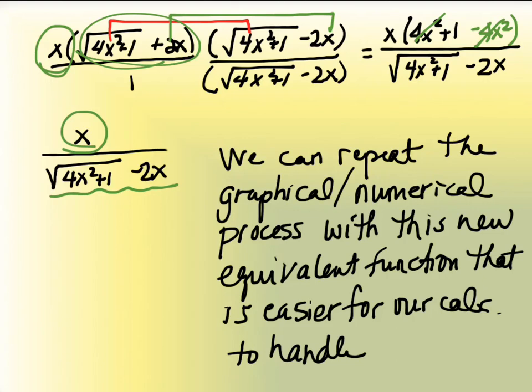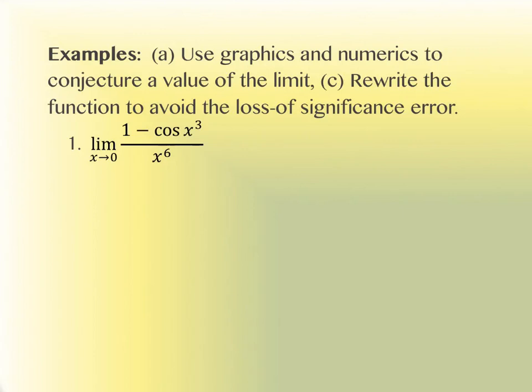I'm going to repeat all of this idea now with a couple more examples. Looking at the directions on your homework sheet: use graphics and numerics to conjecture a value for the limit — that's part A. Part B, which I've crossed out, talked about finding a way to show the loss of significance error — you do not need to do that on your homework. But we are going to do part C, which is to rewrite the function to avoid that error. Your homework only has four problems of this type.